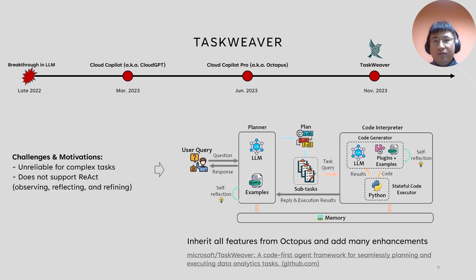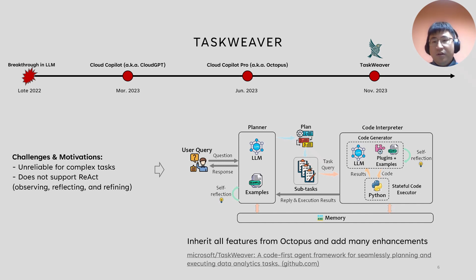Later, we encountered some challenges when applying Octopus to some of our collaborators' scenarios. First, if the task is too complex, the model may fail to generate the correct code. When the task is very complicated, the generated code can be very wrong and generation is error-prone. Although we have auto-revision, it may not be able to fix the code, and a better solution is to decompose the task into smaller subtasks to solve them one by one. The second challenge is that Octopus does not support observing the intermediate execution results and reflecting on them to refine the plan. These two challenges motivated us to upgrade Octopus to a new framework called Taskweaver.